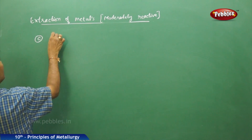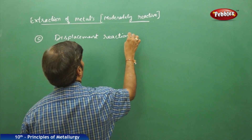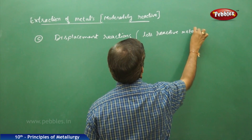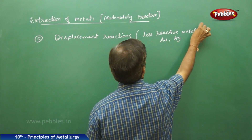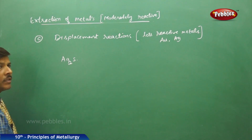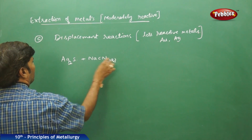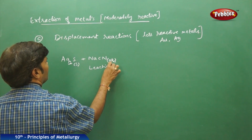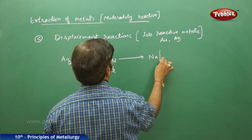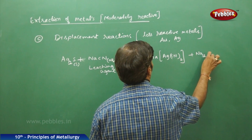The last part of the discussion covers displacement reactions, valid for less reactive metals like gold and silver. Take argentite (Ag2S), which is silver glance. Ag2S solid is treated with sodium cyanide (NaCN) aqueous, which acts as a leaching agent. It immediately forms a complex — sodium argento cyanide complex — and sodium sulphide as a by-product.